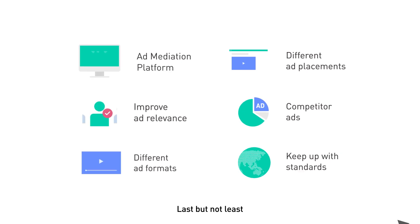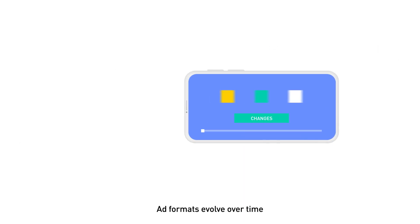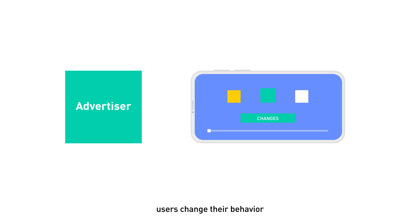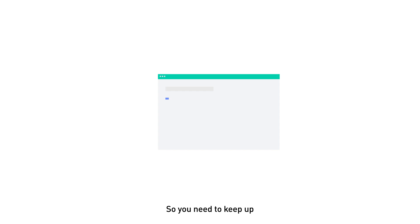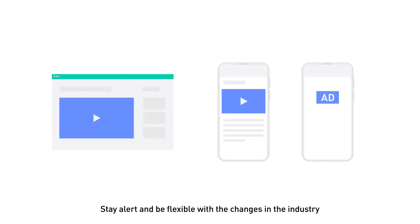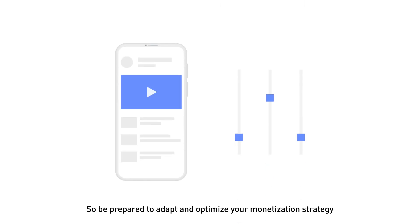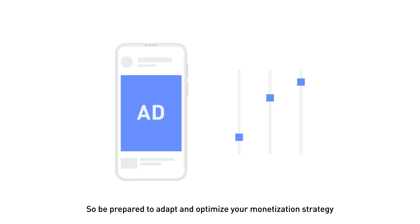Last but not least, keep up with industry standards. Ad formats evolve over time. Users change their behavior and technology constantly innovates, so you need to keep up. Stay alert and be flexible with the changes in the industry. Today's highest performing formats might not be at the top tomorrow, so be prepared to adapt and optimize your monetization strategy.